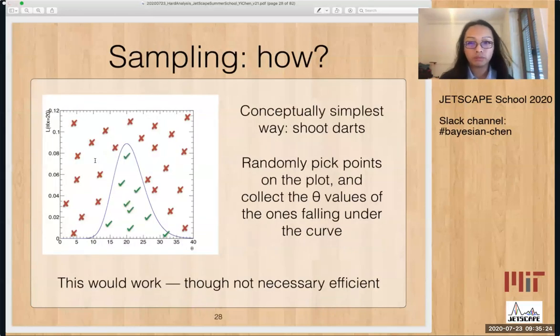Okay, and how do you do the sampling? The conceptually most simplest way is to basically shoot darts. So we have this diagram, this curve. We print it out, put it on the wall and we shoot darts randomly. And then some will land outside the ring, above the curve, some will land below the curve. And then we collect everything that's below the curve. And that's our sample. And I think it's easy to convince yourself that the samples will distribute according to the height of the curve.